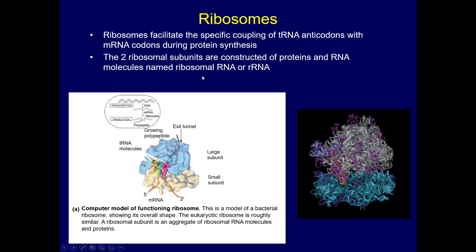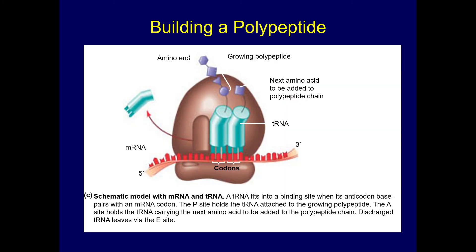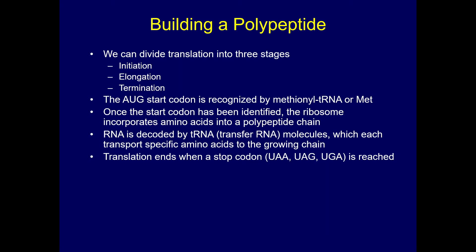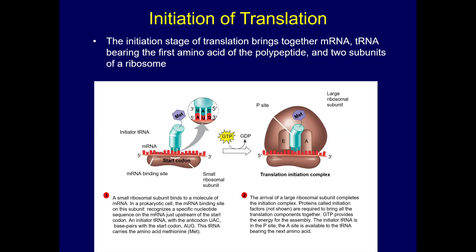Ribosomes facilitate the entire translation process — they're the protein structures that help combine all the amino acids together to make new proteins. Just like in transcription, translation has the stages of initiation, elongation, and termination. The start codon gives us our first amino acid, and from there, more and more amino acids are added.